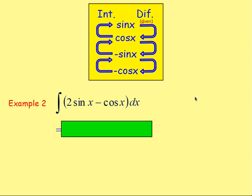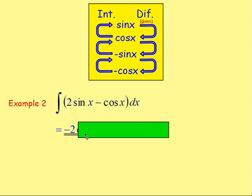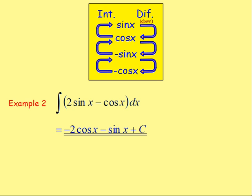Example 2: integrate 2sin(x) − cos(x) with respect to x. First, integrating 2sin(x) — the 2 stays as it is, but integrating sine you go up the way, back to negative cos. So 2sin(x) integrates to negative 2cos(x). Then integrating negative cos(x): integrate negative cos and you get negative sin(x). Don't forget the plus C. So the answer is negative 2cos(x) − sin(x) + C.